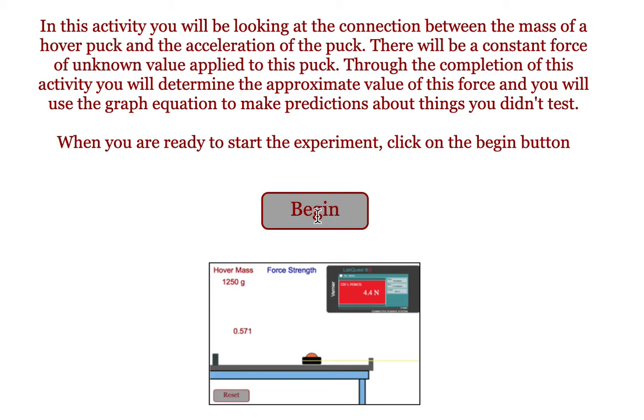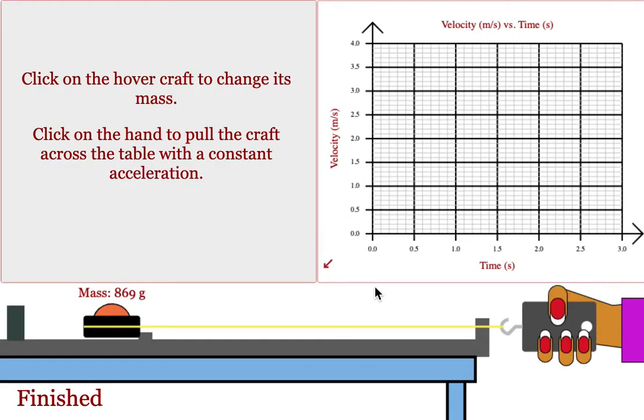In today's activity, you're going to be testing one part of Newton's second law. To do this activity, you're going to hit the begin button. You're going to pull this hovercraft across the lab table with a constant force. This force will remain constant for the entire experiment.